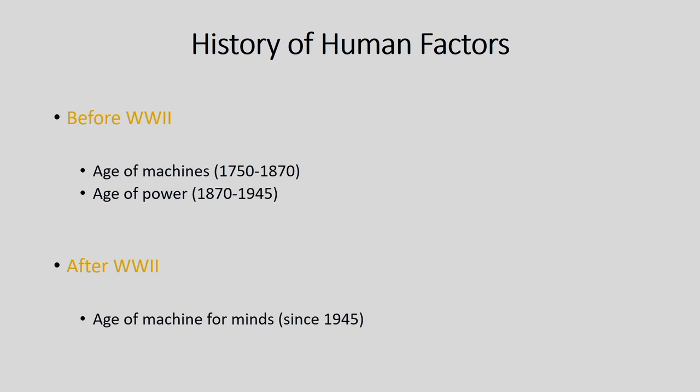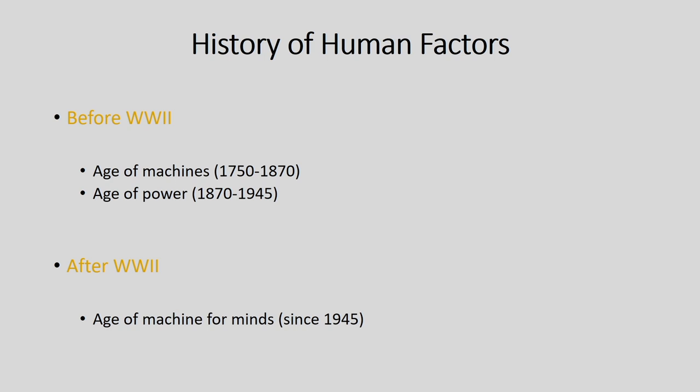For clarity, the history is divided into two parts: before World War 2, covering the age of machines from 1750 to 1870 and the age of power from 1870 to 1945; and after World War 2, where people from experimental psychology and cognitive psychology backgrounds were called to study machines, study humans, study their interactions, and redesign machines so that performance increased. After World War 2, we have the age of machines of mind since 1945, still ongoing.